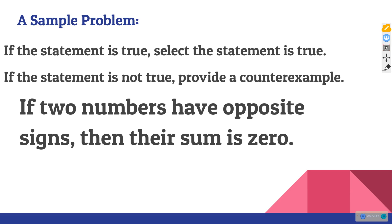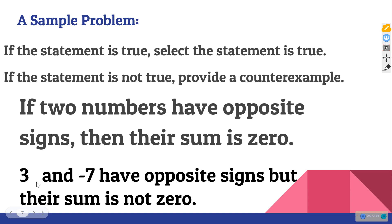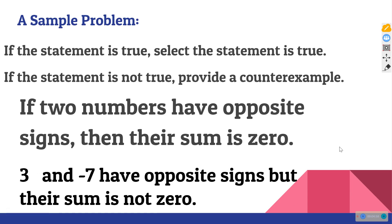It probably wouldn't take you too long to think of such a pair of numbers. One such pair could be positive three and negative seven. This number is positive and this number is negative, so they do have opposite signs — these two numbers satisfy the hypothesis. But if I add them up, I get negative four, and negative four is not zero. We've shown that this is a case where the hypothesis is true but the conclusion is false. So three and negative seven create what is called a counterexample.